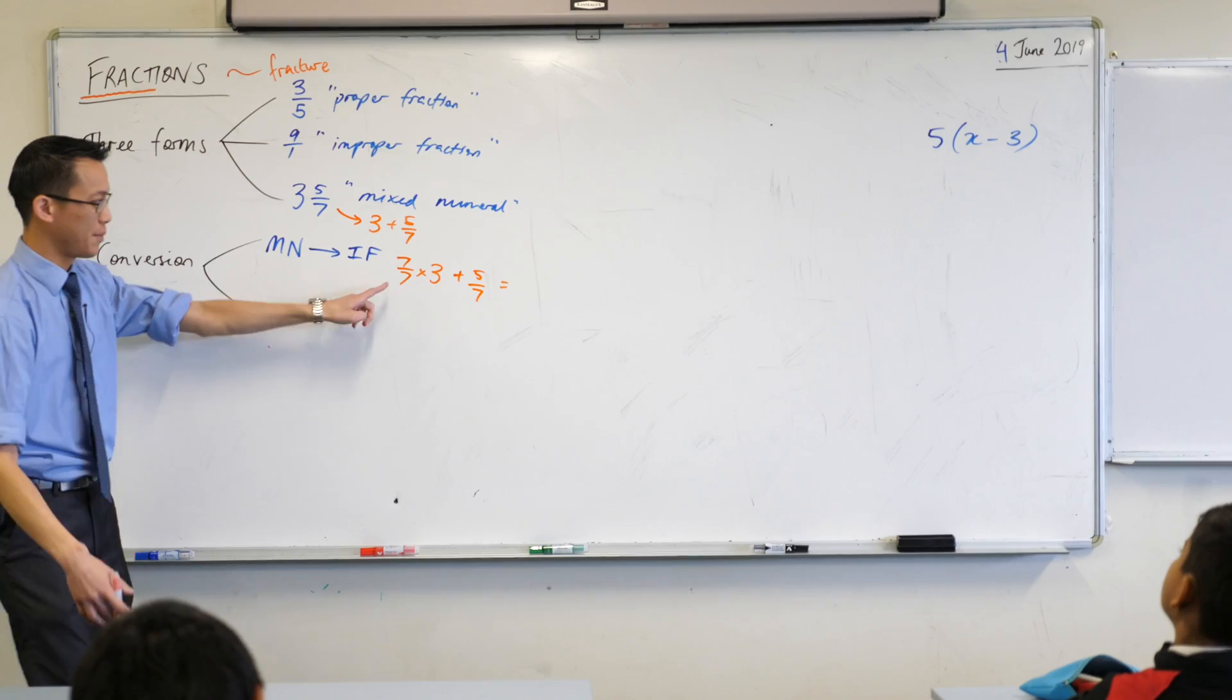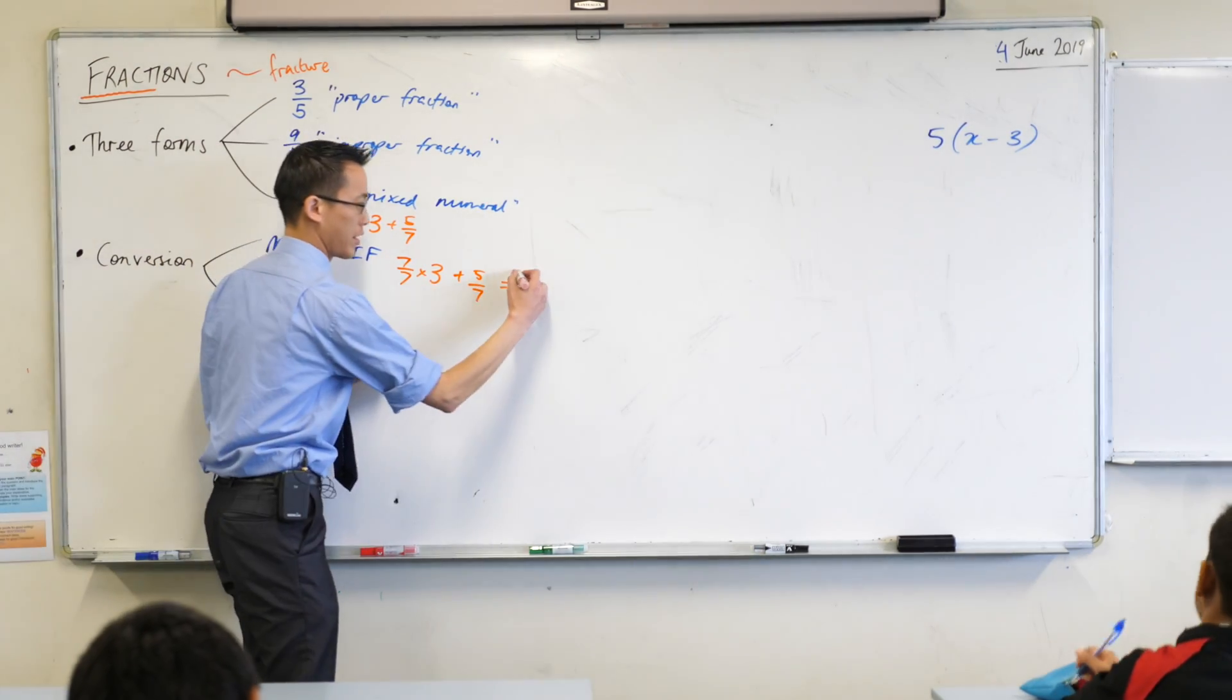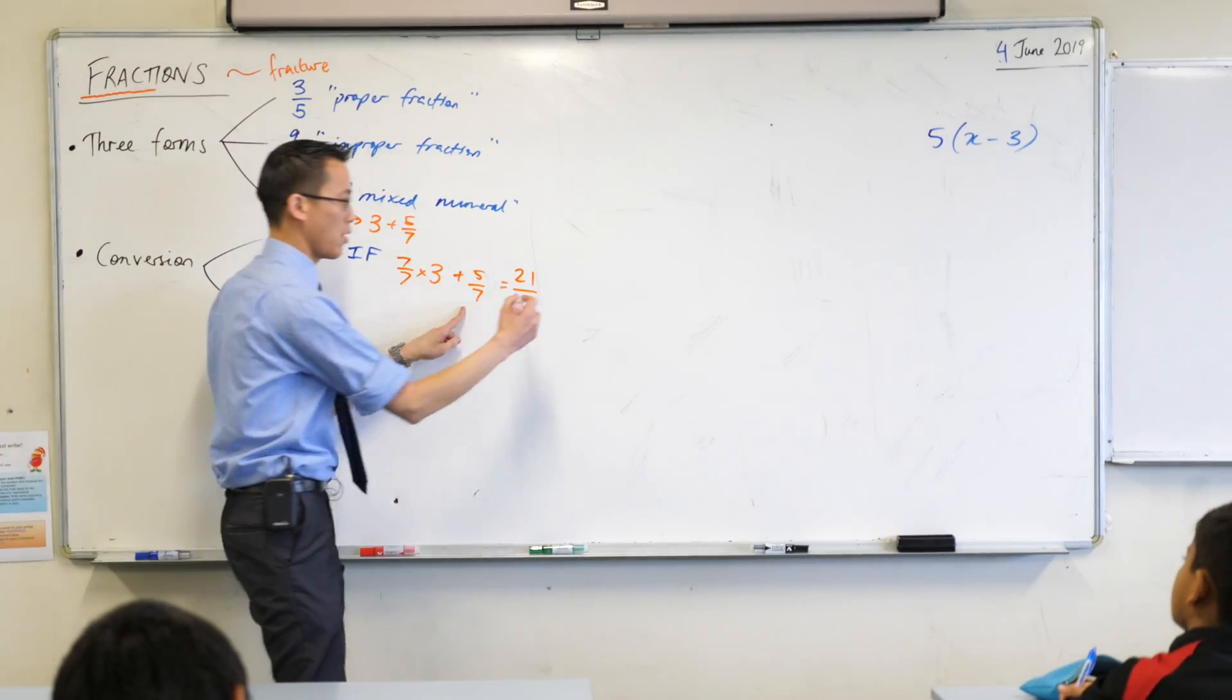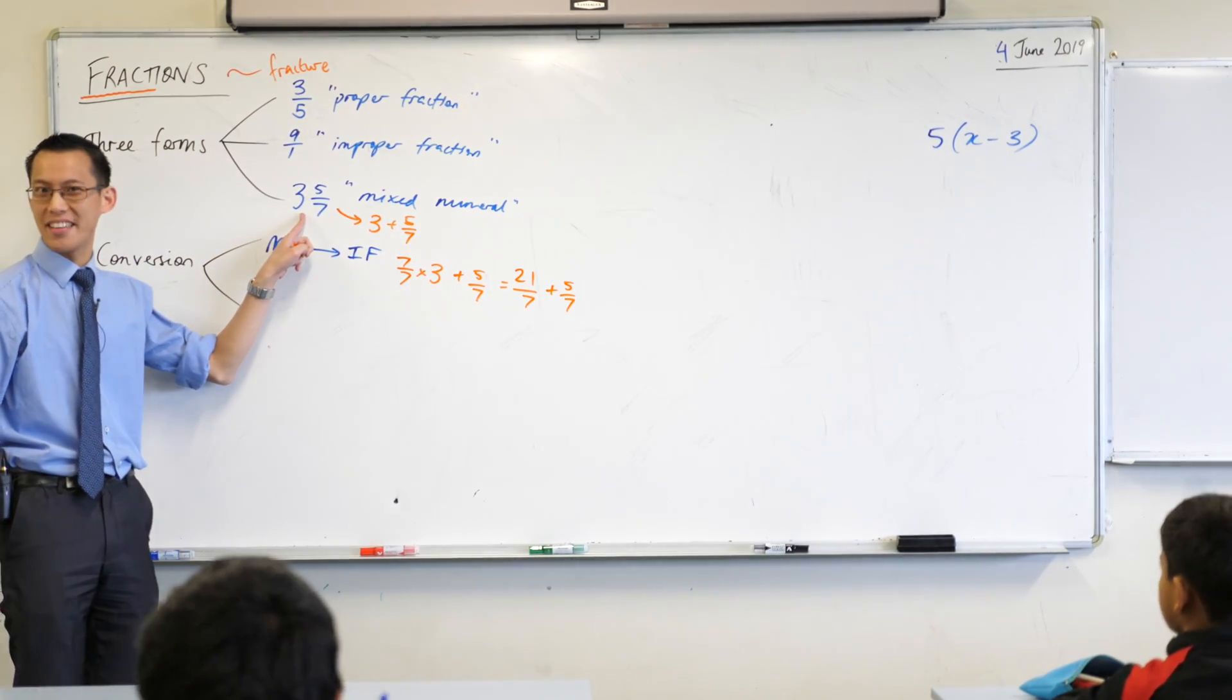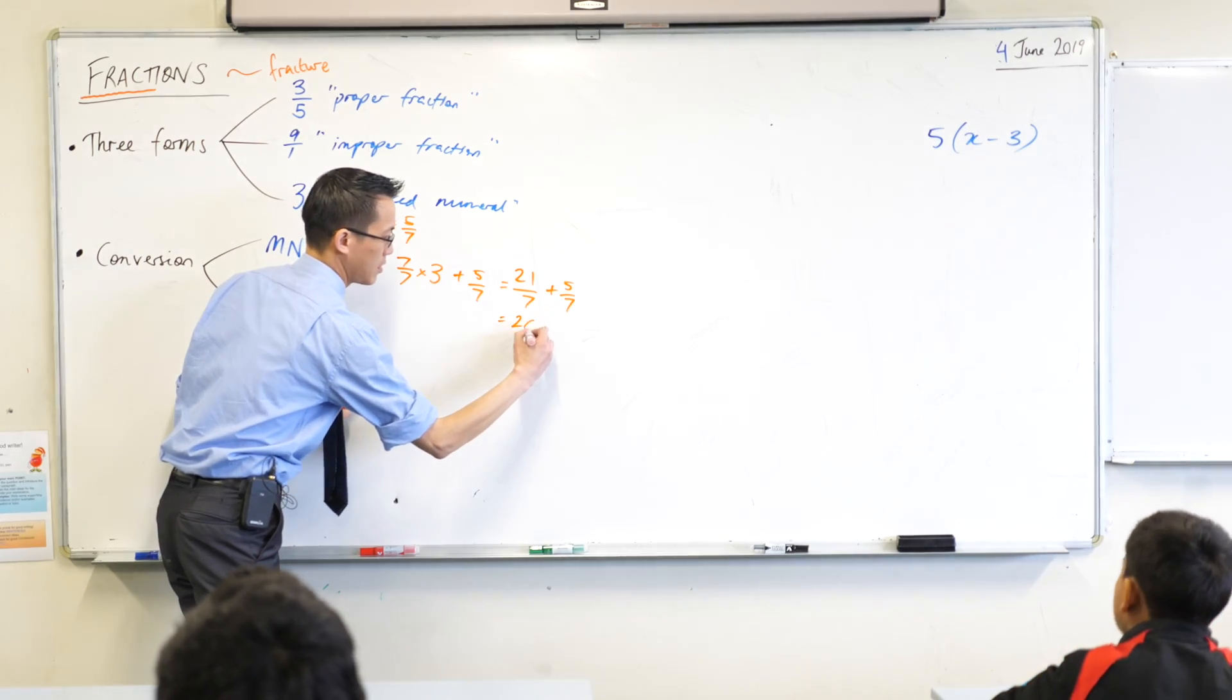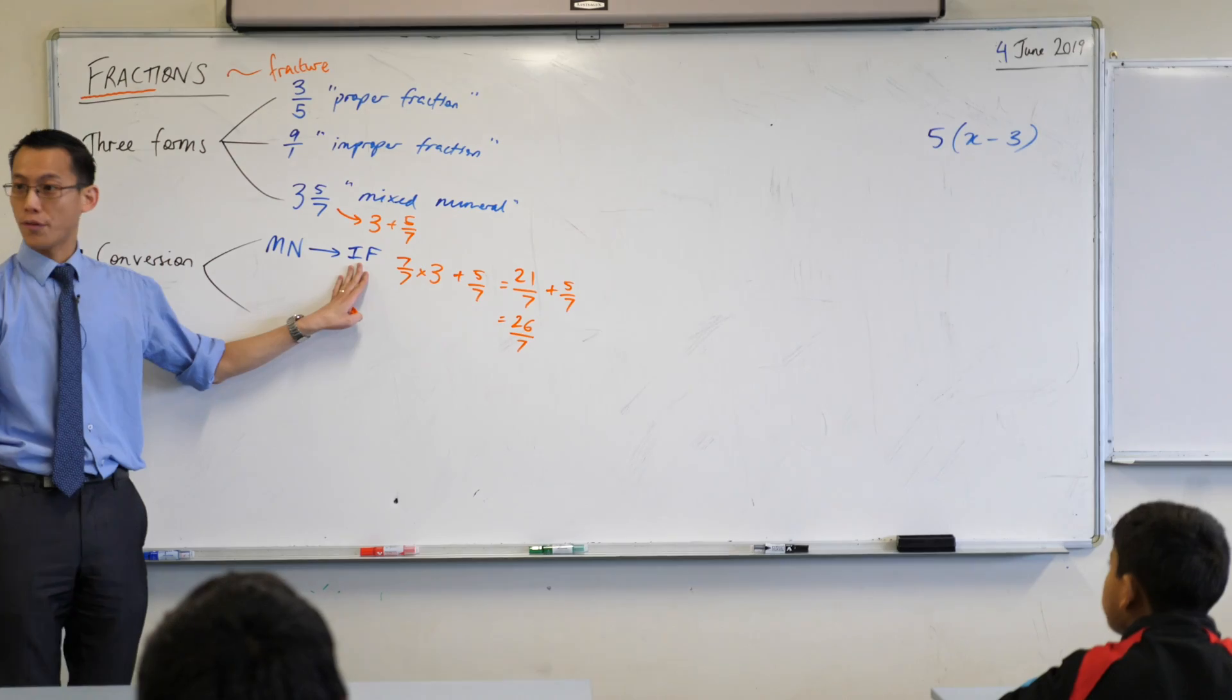Five over seven. And at this point, you can tell me, what is seven times three? It's 21. Very good. That's how many sevenths we have over here, and then we've got five more of them over here. And that's why we can say, in total, how many sevenths are there in this mixed numeral? 26. Very good. 26 over seven. So that's how we would go from a mixed numeral to an improper fraction. We would reverse that if we wanted to go the other way around.